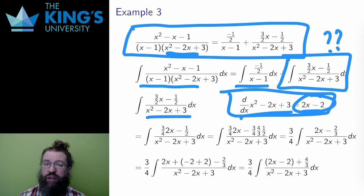The numerator is currently 3x over 2 minus 1 half, which doesn't look anything like 2x minus 2. So how do I do this? Well, there are some very clever algebra tricks that I use. All of them are some version of multiplying and dividing by the same thing, or adding and subtracting the same thing. All of these leave the value of the terms the same, but they let me write them in a particular form.